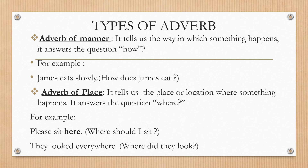We have adverb of place. It tells us the place or location where something happens. It answers the question where. For example, in a sentence: please sit here. You may ask where should I sit — here. That indicates the place I want you to sit. Another example: they looked everywhere. So where did they look? Everywhere — indicating place or location.